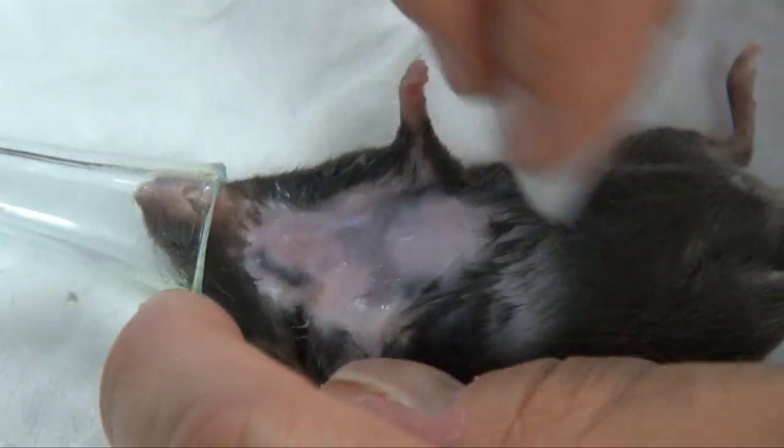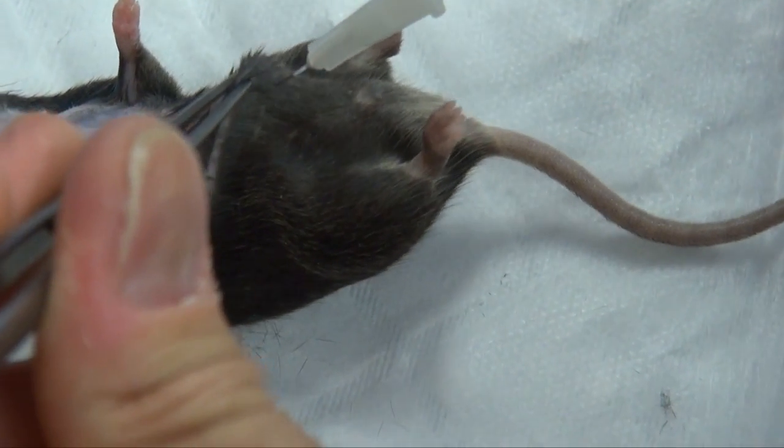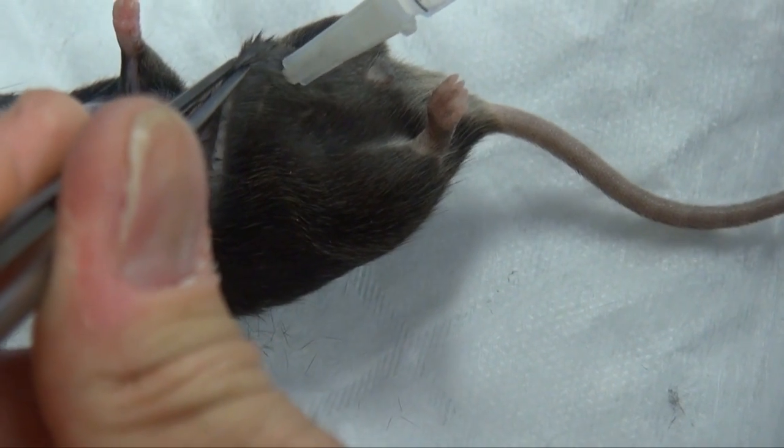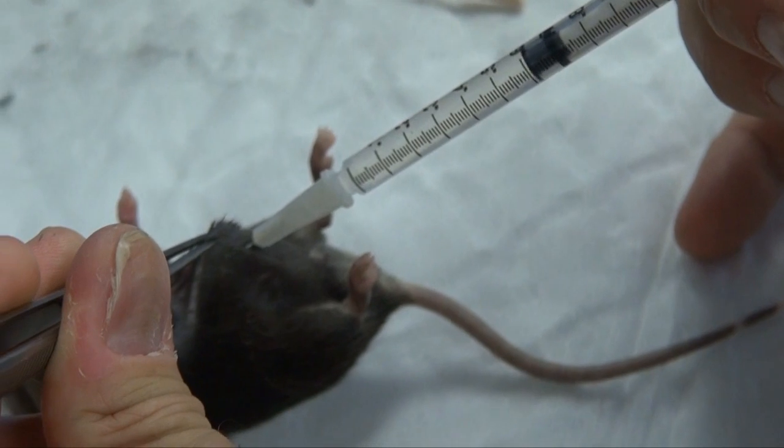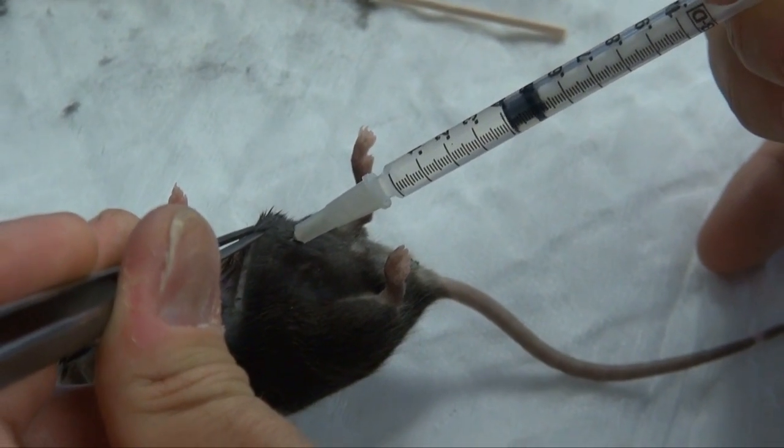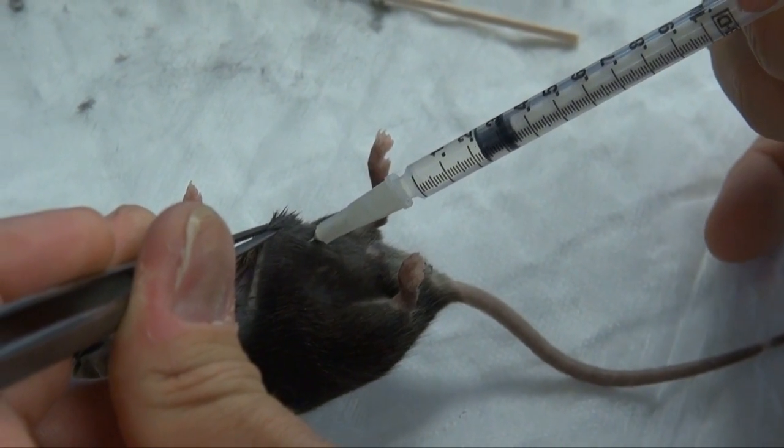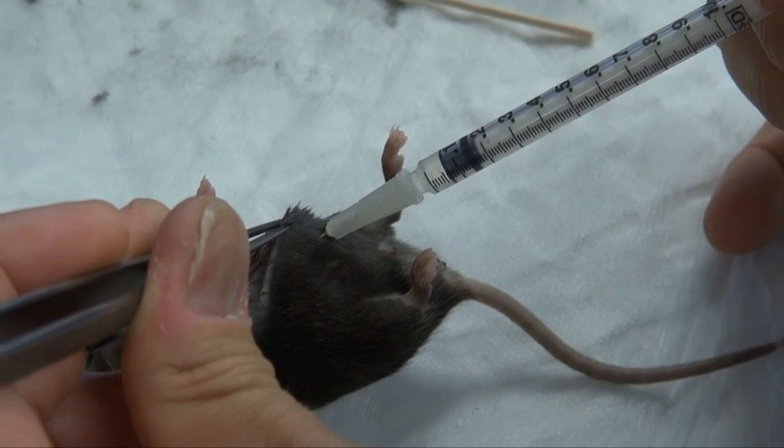Inject 1 mL of saline intraperitoneally by grasping the abdominal skin and subcutaneous tissue with forceps and sharply entering the peritoneal cavity with a 25 gauge needle. After intraperitoneal injection, allow animal to recover for 4 hours.